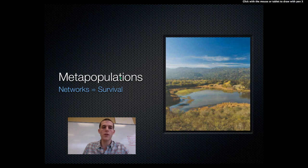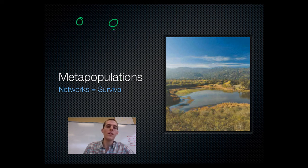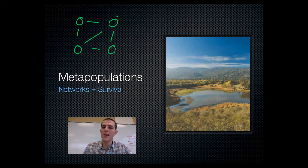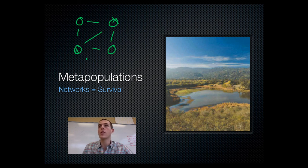If you've got a situation where these organisms are able to move and mix between populations, they can shuffle their genes all over the place. A disease might come along and kill a couple of individuals in one or two of the populations, but since there are a lot of different gene combinations around, they're more likely to survive.